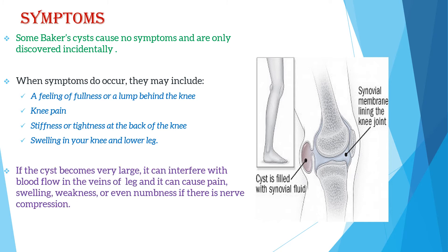If the cyst becomes very large, it can interfere with blood flow in the veins of the leg and can cause pain, swelling, weakness, or even numbness if there is nerve compression. Very rarely, the cyst can even burst and rupture.